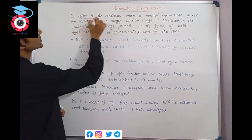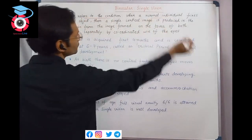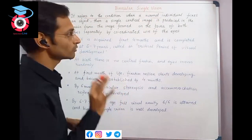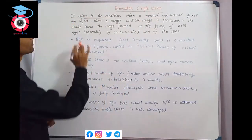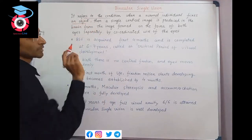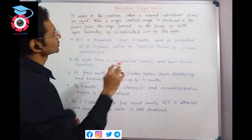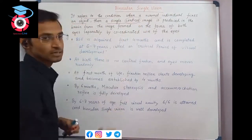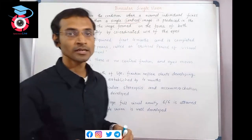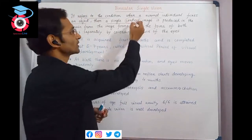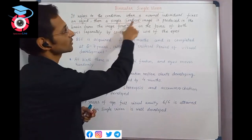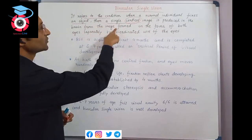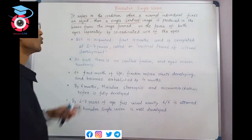Binocular single vision refers to the condition when a normal individual - an actual normal human being with no binocular defect - fixes an object, focuses on it, and a single cortical image is produced in the brain. The visual cortex produces a single image from the images formed on the fovea of both eyes.